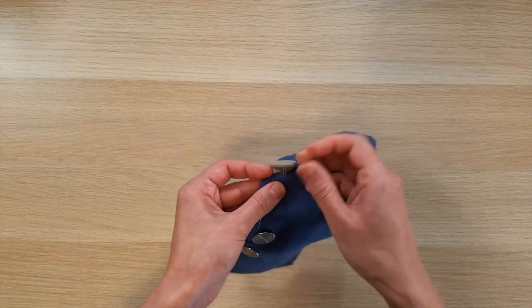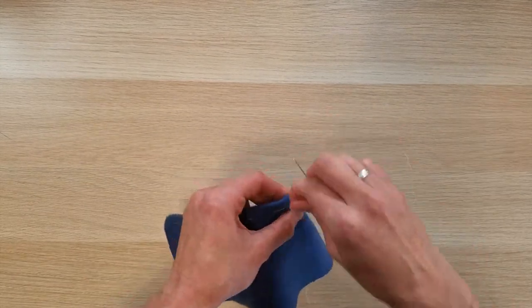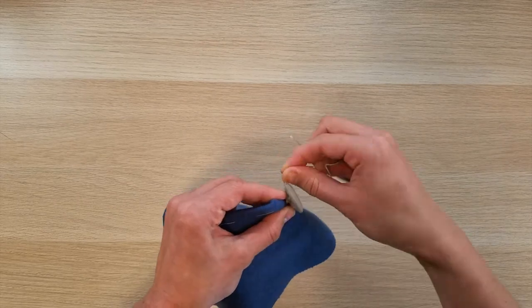Once the button is secured, tightly wrap your thread around the base and the base of the thread to create a shank for your button. Sink the needle back down through the fabric and secure on the back side.